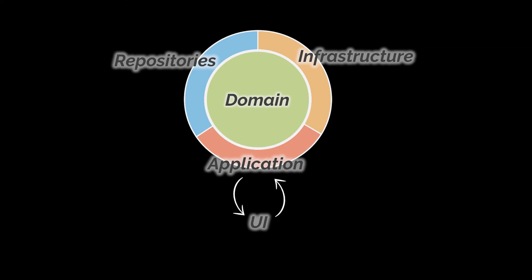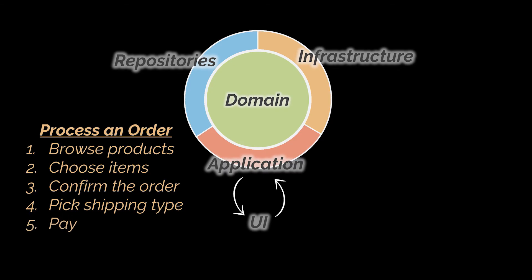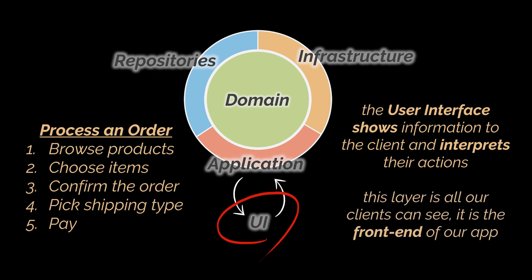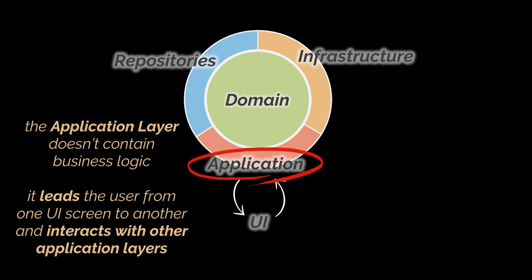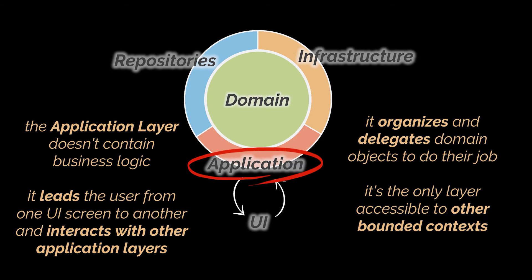Let's bring back our online shopping application as a DDD example. The business domain is to process an order: the customer first browses products, chooses what they want, confirms the order, chooses the shipping type, and pays. The user interface layer is where the customer can find and browse all the products and initiate their order — it shows information to the client, interprets their actions, and is all the client can see. The application layer doesn't contain business logic; it leads the user from one UI screen to another, interacts with application layers of other systems, organizes and delegates domain objects to do their job, and is the only layer accessible to other bounded contexts.